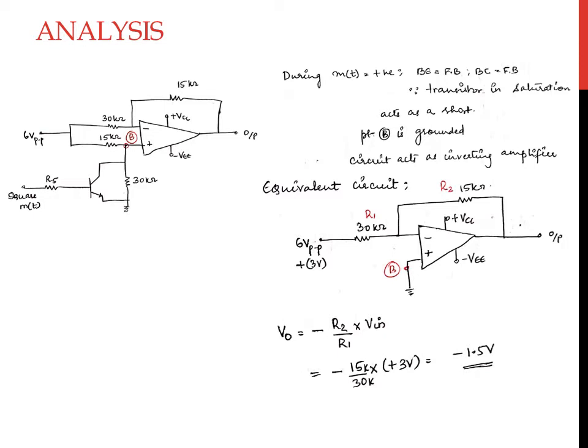The input to the inverting amplifier circuit is the carrier signal, which is 6 volts peak-to-peak, or equivalently plus or minus 3 volts. For our analysis, we have considered plus 3 volts to show that the output voltage is inverted with respect to the carrier. Using the inverting amplifier equation, output voltage equals minus R2 by R1 into Vin, which gives minus 15 kΩ divided by 30 kΩ multiplied by 3 volts, yielding minus 1.5 volts.